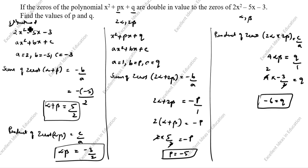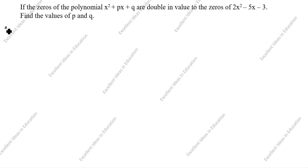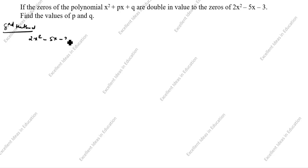We will now see the second method. What is given in this question? 2x squared minus 5x minus 3. We will solve this by splitting the middle term.